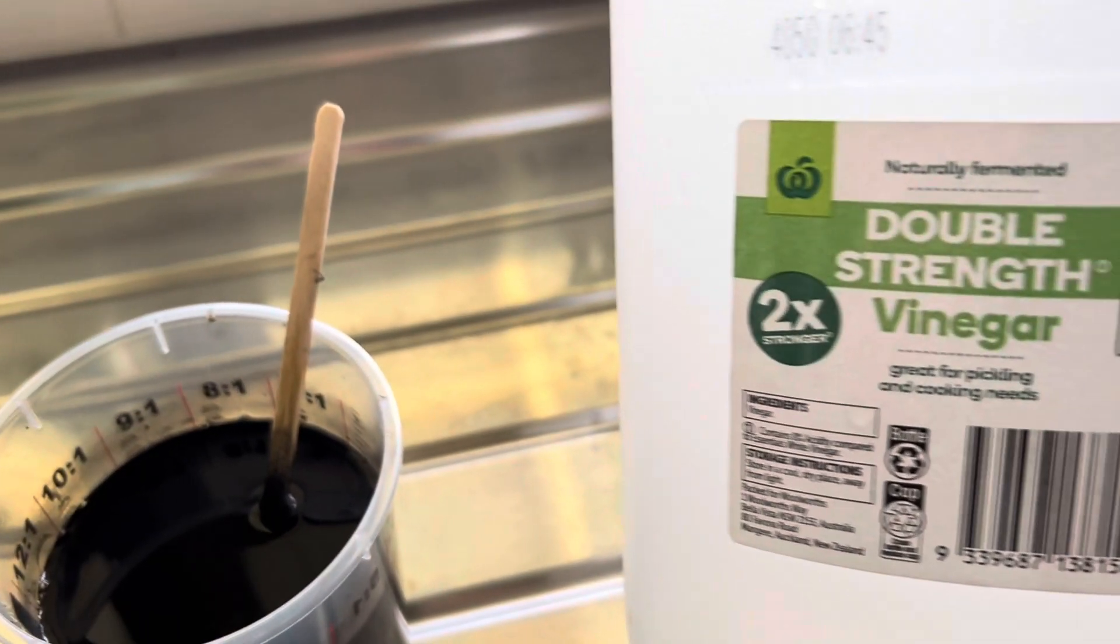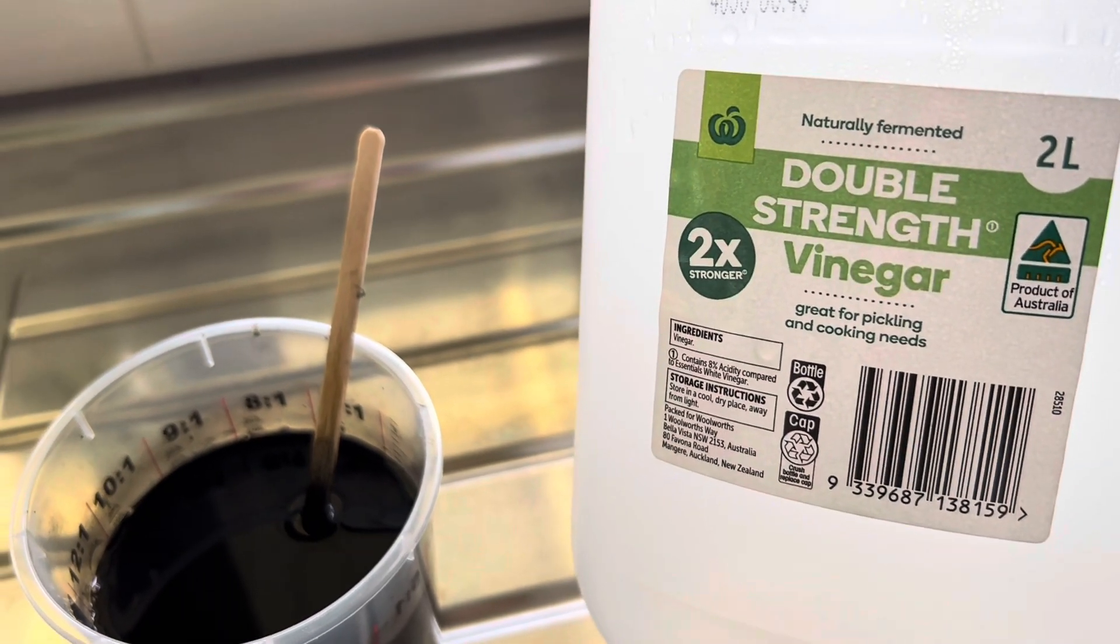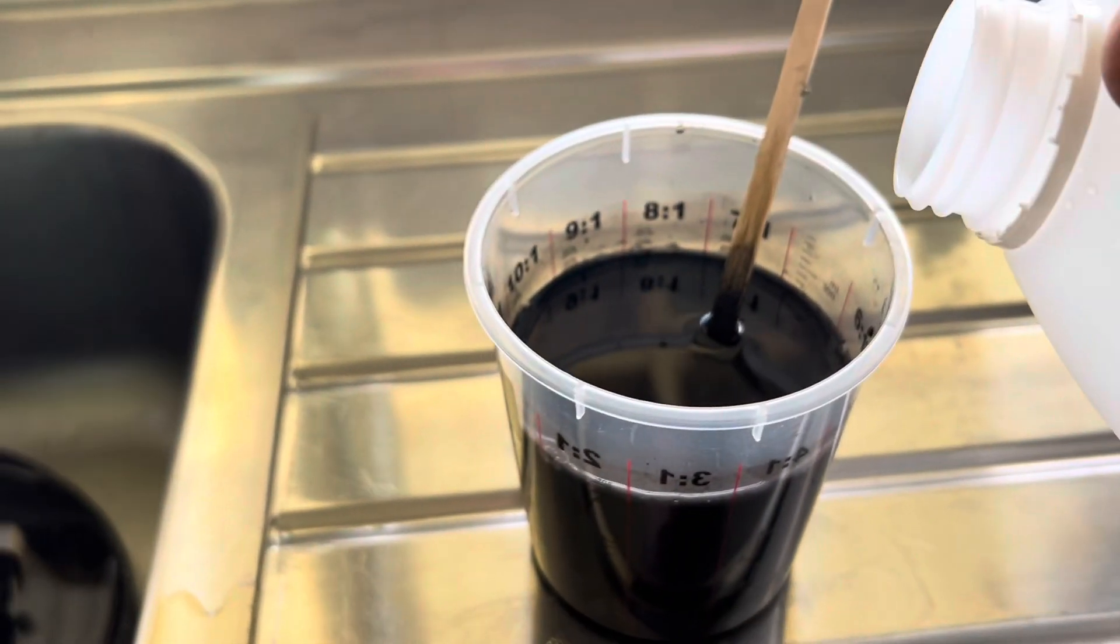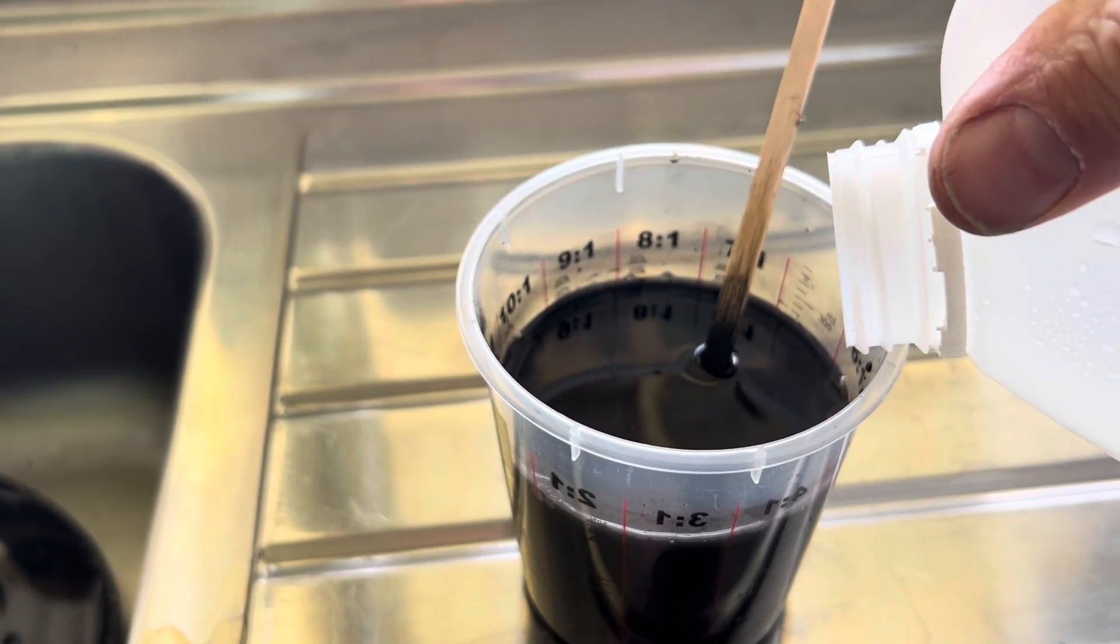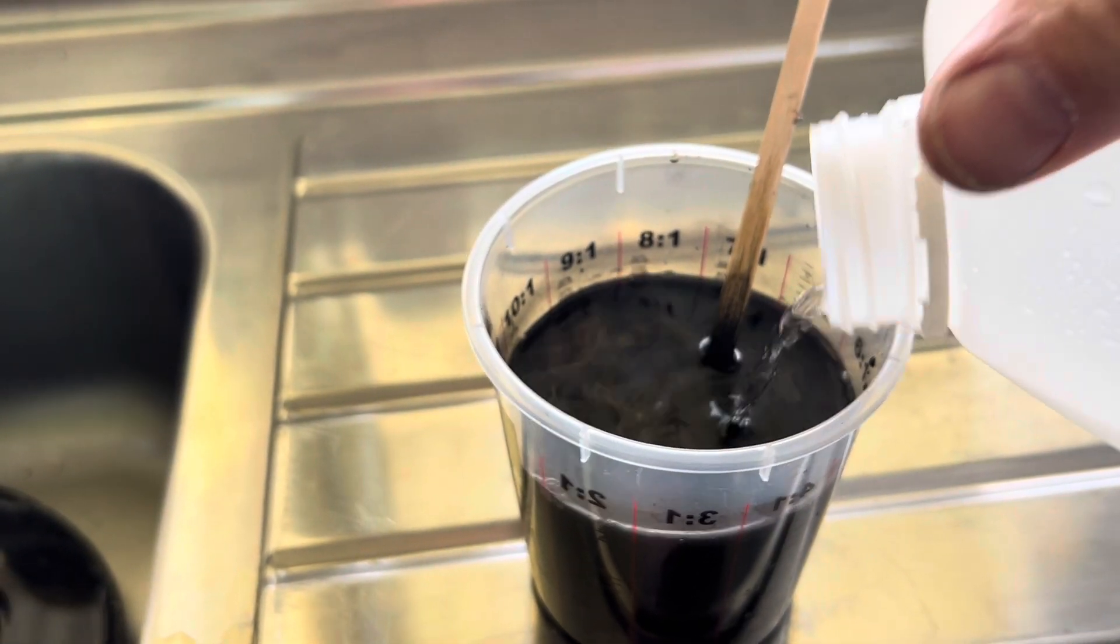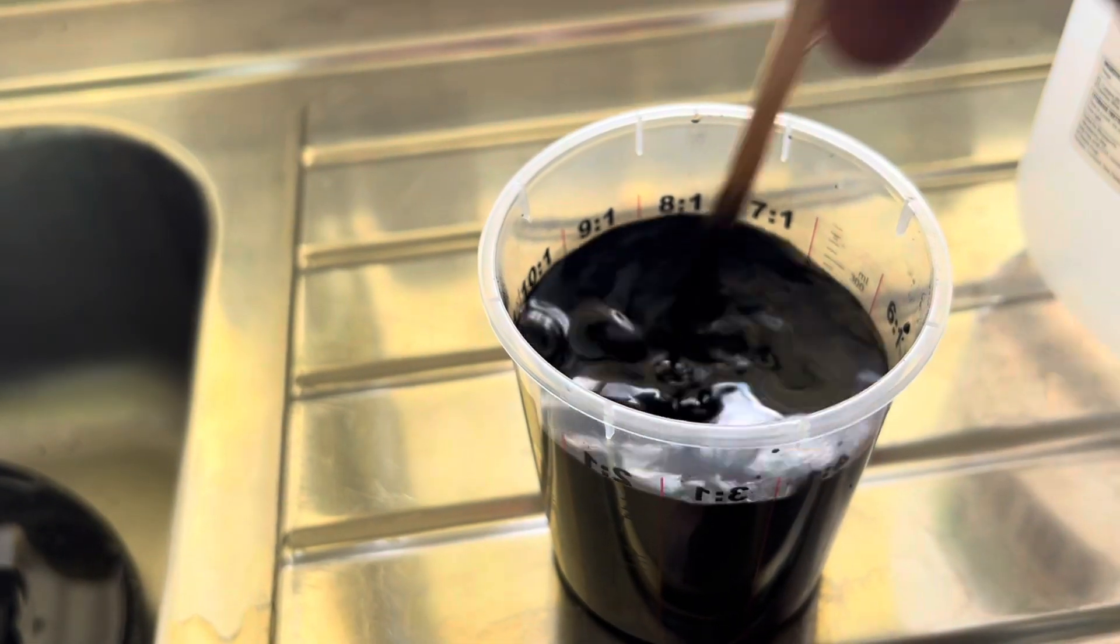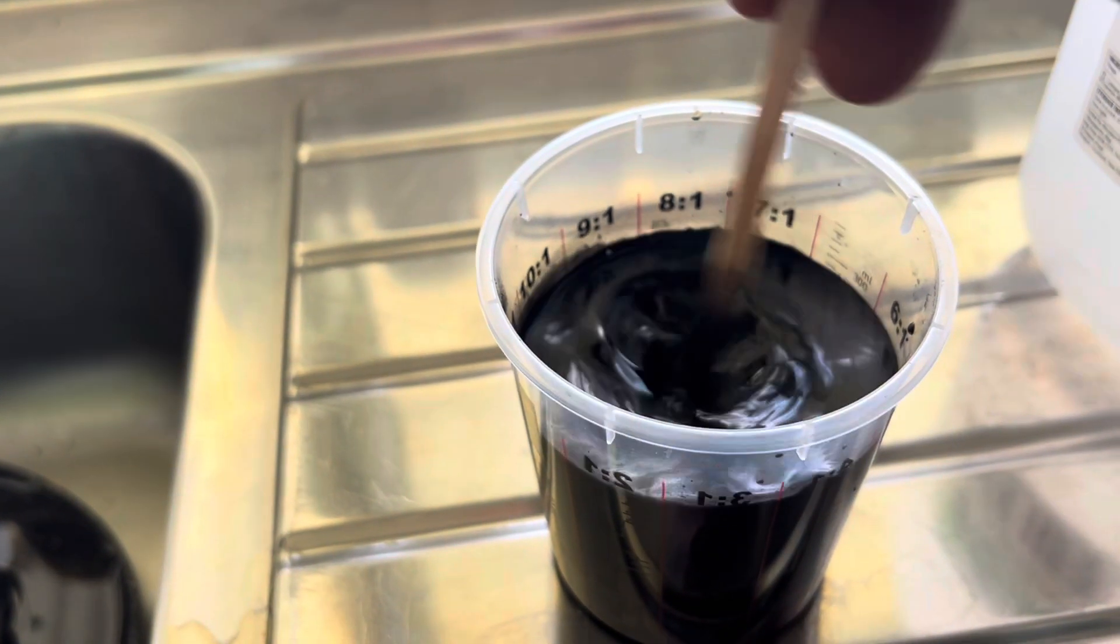So what I'm doing is just adding a little bit by a little bit double strength vinegar, and hopefully we don't have a runaway reaction here. Just a few drops to start with. We keep adding that until we change the pH maybe to a five.